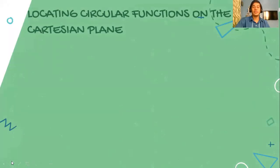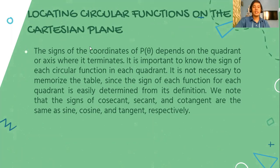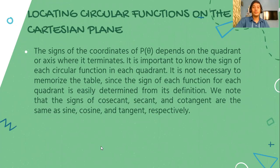Let's proceed to locating circular functions on the Cartesian plane. The signs of the coordinates of P of theta depend on the quadrant or axis where it terminates. So it is very important to know the sign of each circular function in every quadrant. It is not necessary to memorize the whole table, but we need to know which signs each function belongs to. We always take note that whatever the signs of their reciprocals will also be the sign of their corresponding function.